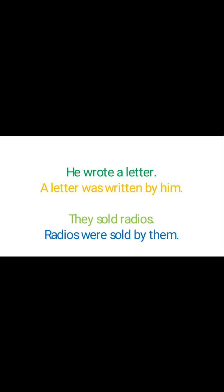We can understand this with the example: 'He wrote a letter.' Here 'wrote' is the second form of the verb 'write', so this is a case of simple past tense. It can be converted into passive form by placing 'a letter' at the beginning as the subject. As 'a letter' is singular, we use 'was' and the third form of 'write', that means 'written by him'. 'Him' is used for 'he'.